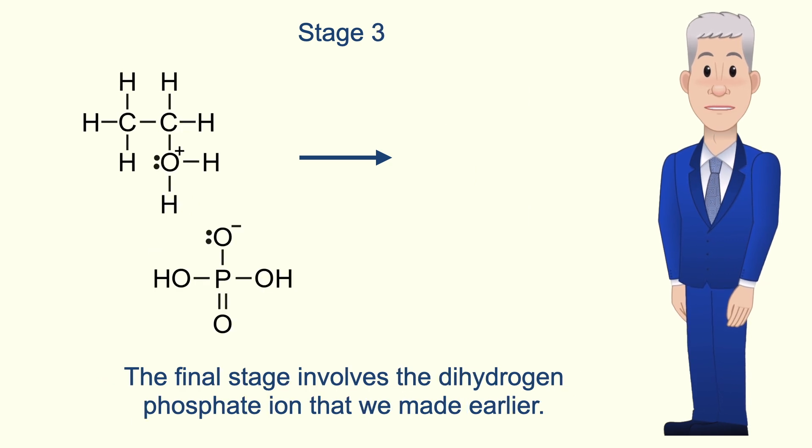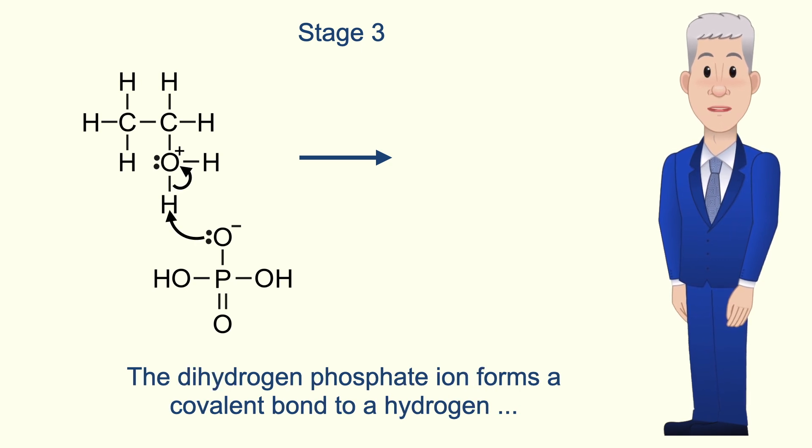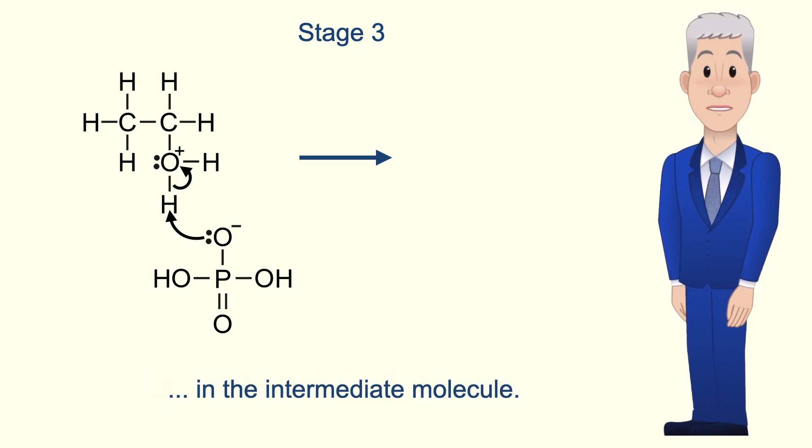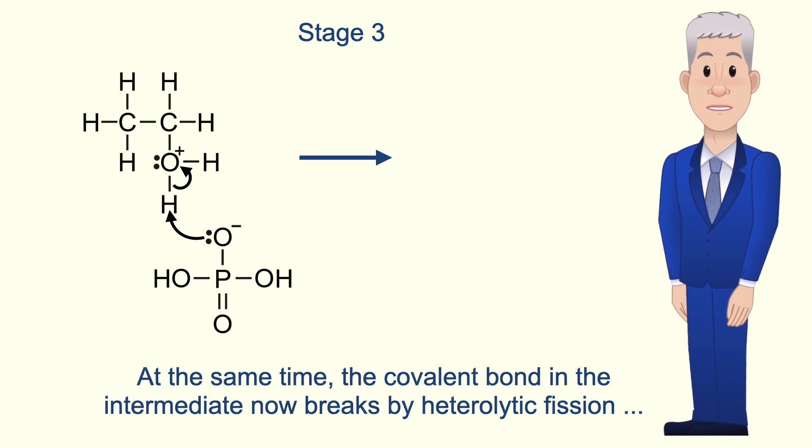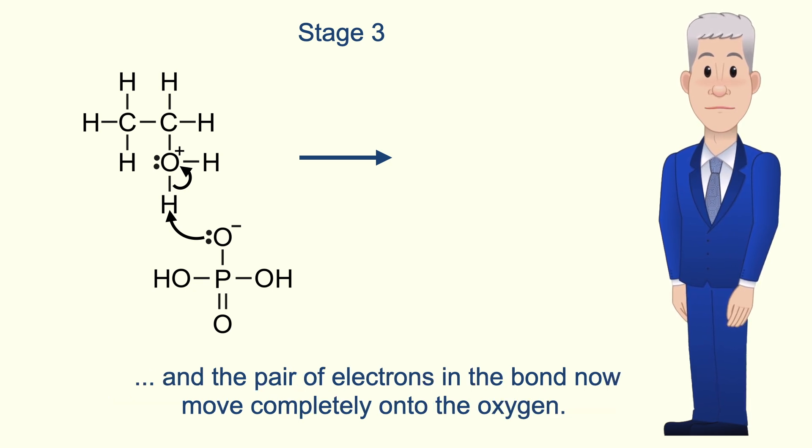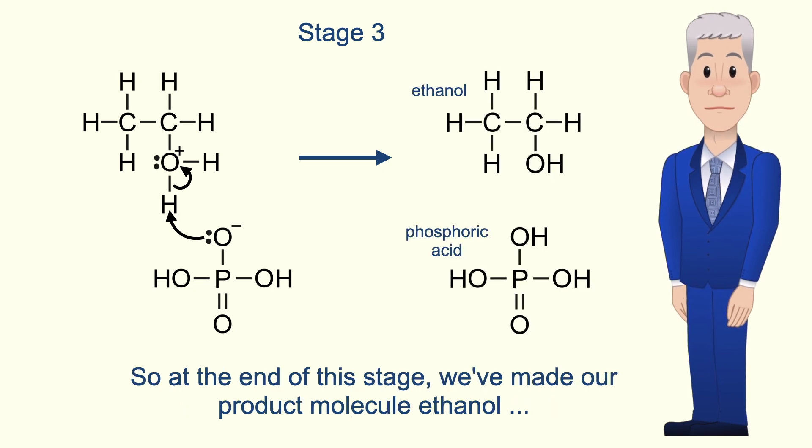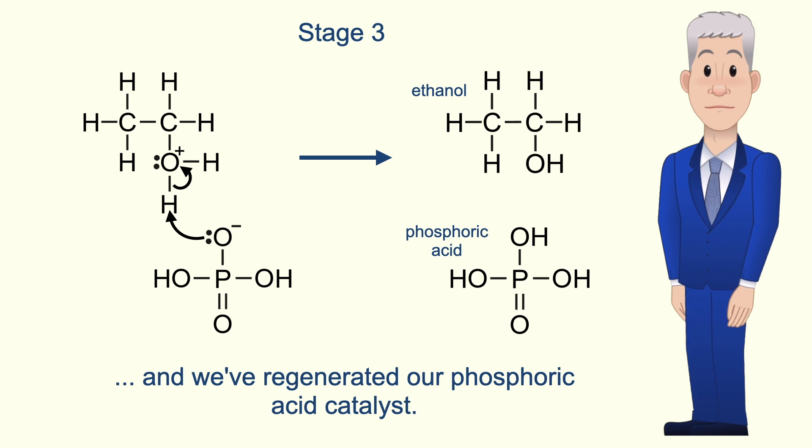The final stage involves the dihydrogen phosphate ion that we made earlier. The dihydrogen phosphate ion forms a covalent bond to a hydrogen in the intermediate molecule. At the same time the covalent bond in the intermediate now breaks by heterolytic fission and the pair of electrons in the bond move completely onto the oxygen. At the end of this stage we've made our product molecule ethanol and we've regenerated our phosphoric acid catalyst.